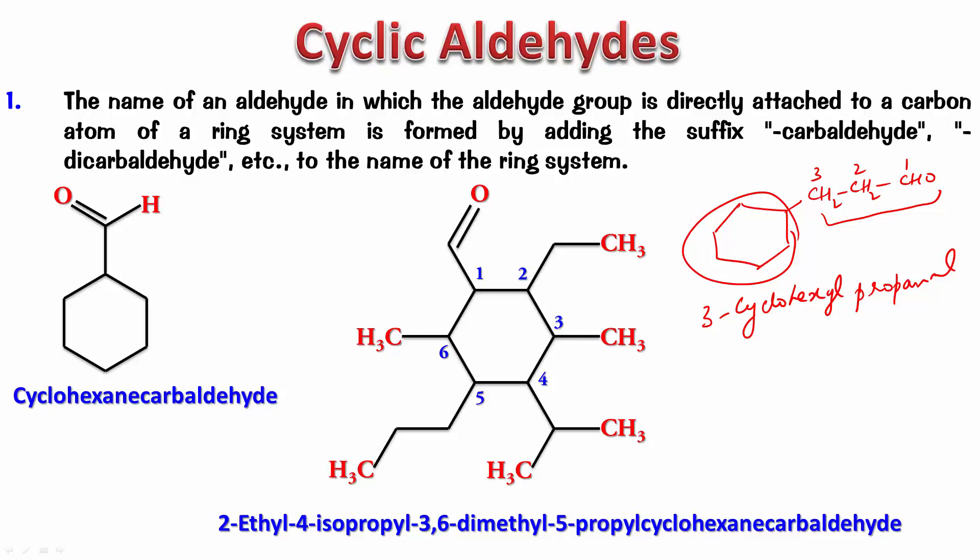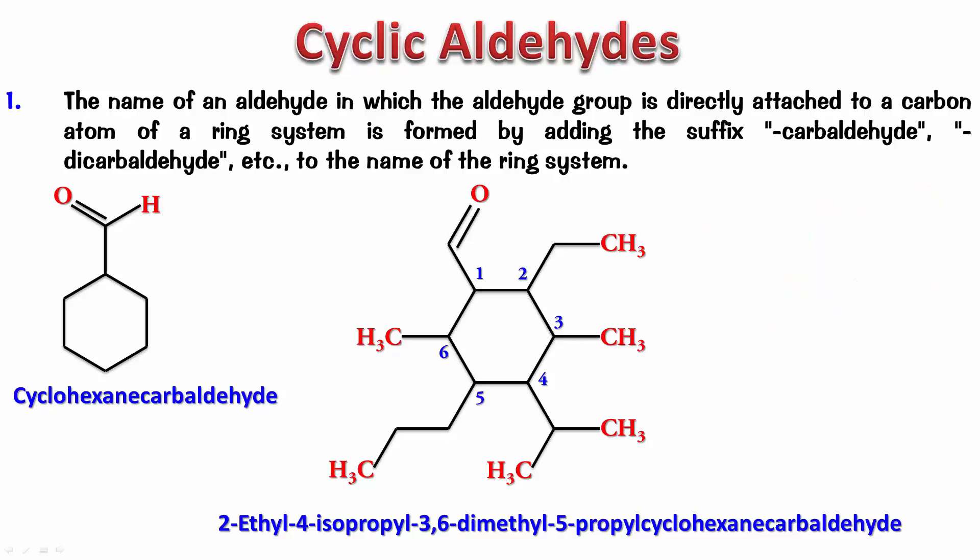So this is how we name aldehydes that involve rings — in cases where the CHO is directly attached to the ring, and in cases where it is not. I hope this video helps you in understanding the naming of cyclic aldehydes.